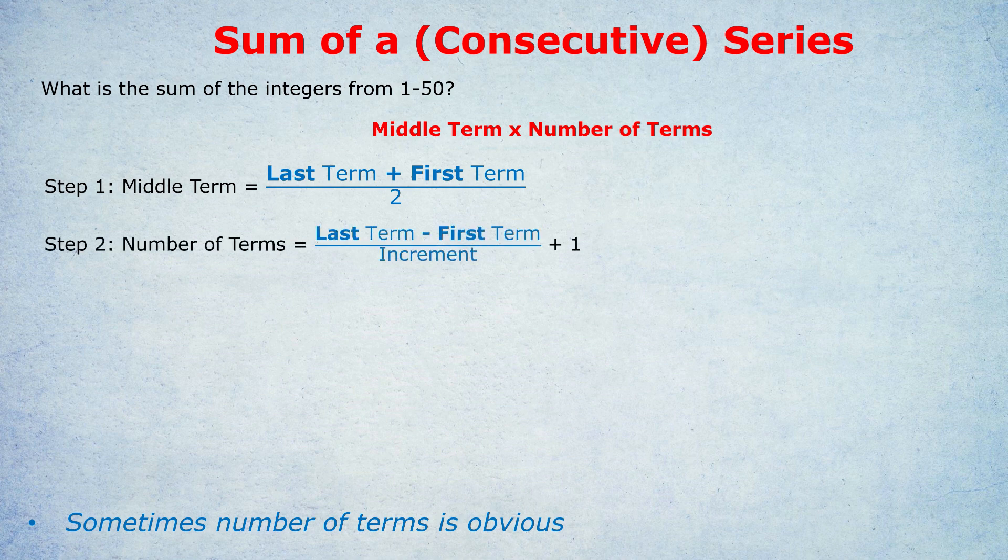Now, I know what you're thinking. You're thinking, well, it's obviously 50, right? We're doing the numbers from one to 50. So there are 50 terms. And you are right. There are 50 integers from one to 50. But sometimes it's not easy to spot how many terms there are. And we'll deal with that in future questions.